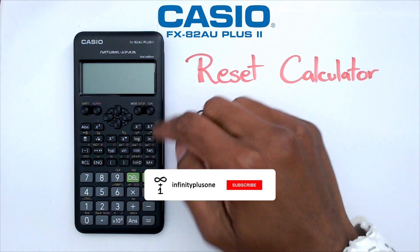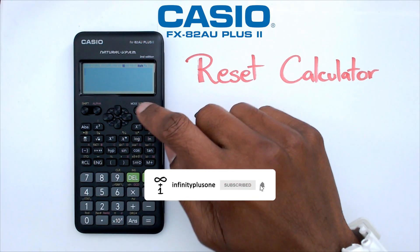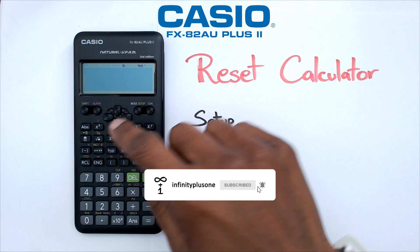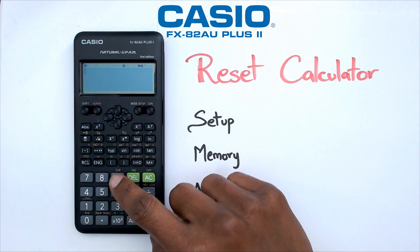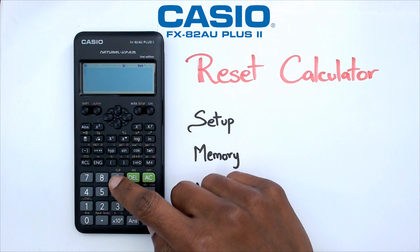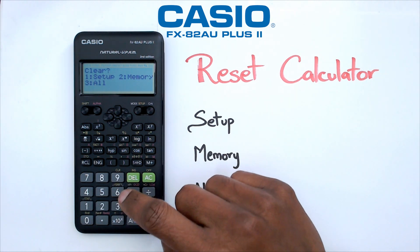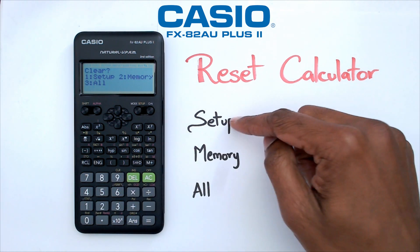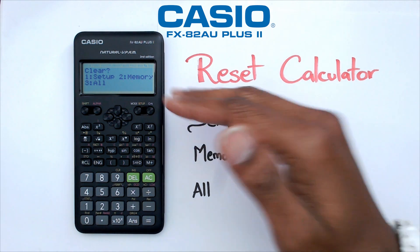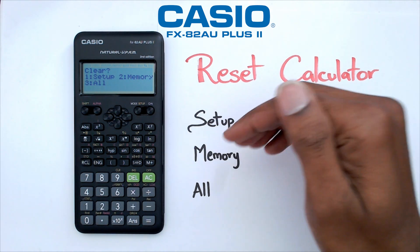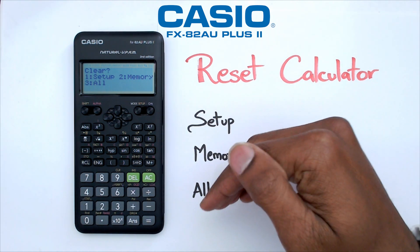Switch on the calculator and once you do that just click on Shift 9, which is the clear button. When you do that you're going to get three options — three menus: you've got Setup, you've got Memory, and you've got All.